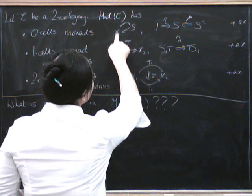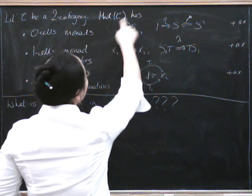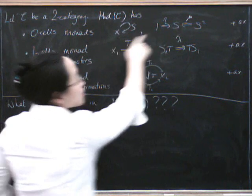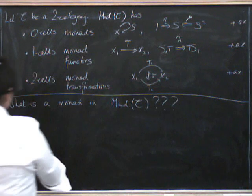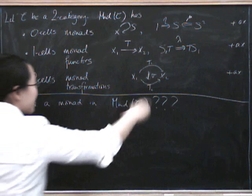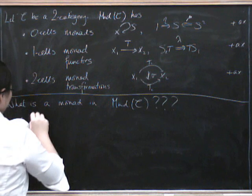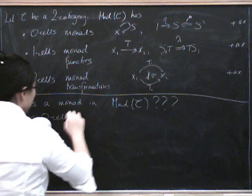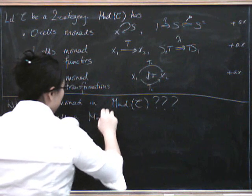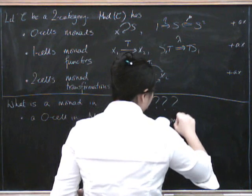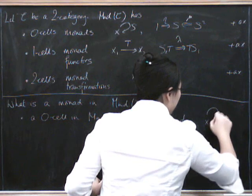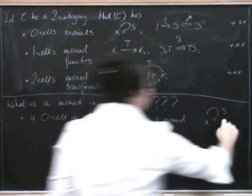It's a zero cell equipped with an endo-1 cell together with a pair of two cells like this. So, it's a zero cell inside this two-category. So, it's a zero cell in monads in C, i.e., a monad in C, like this, equipped with an eta and a mu.